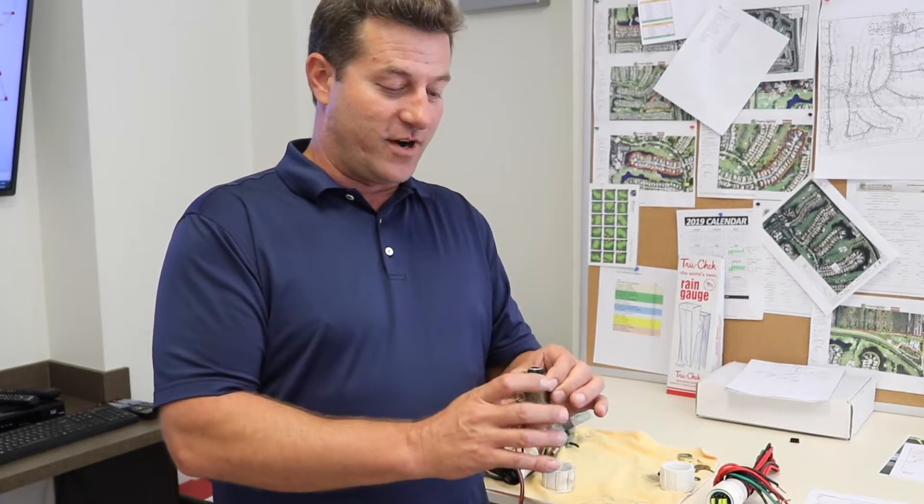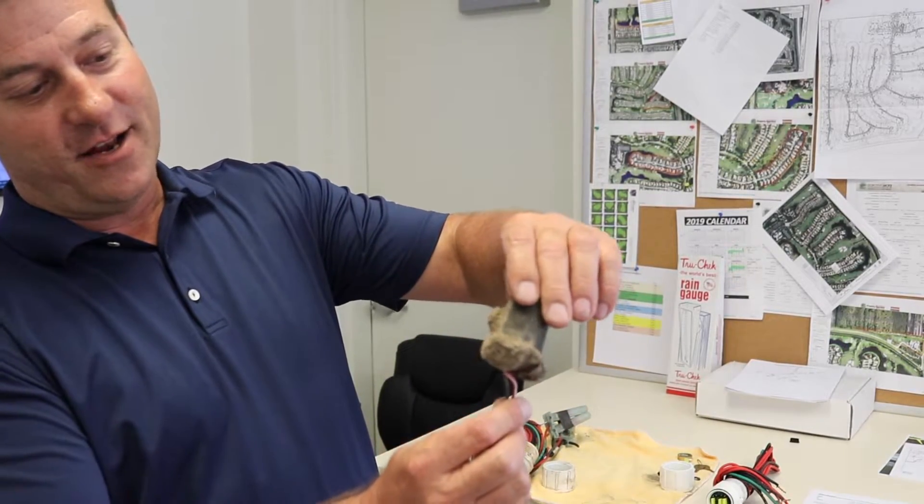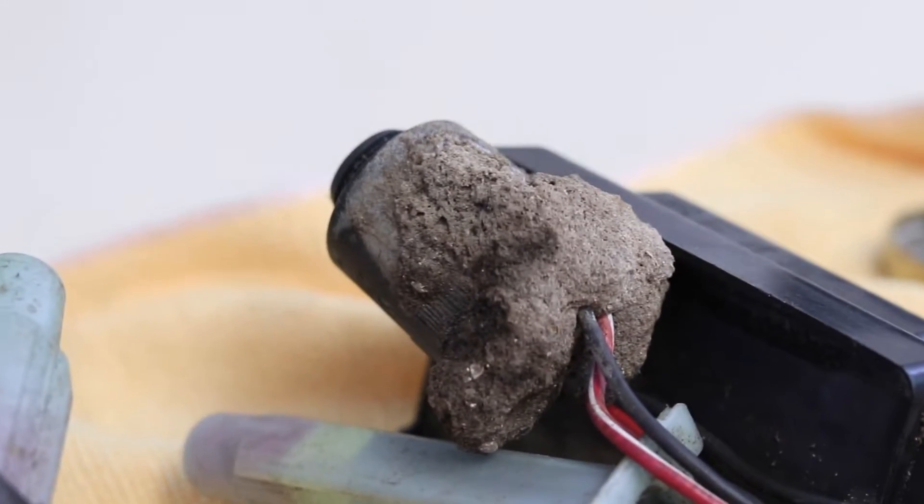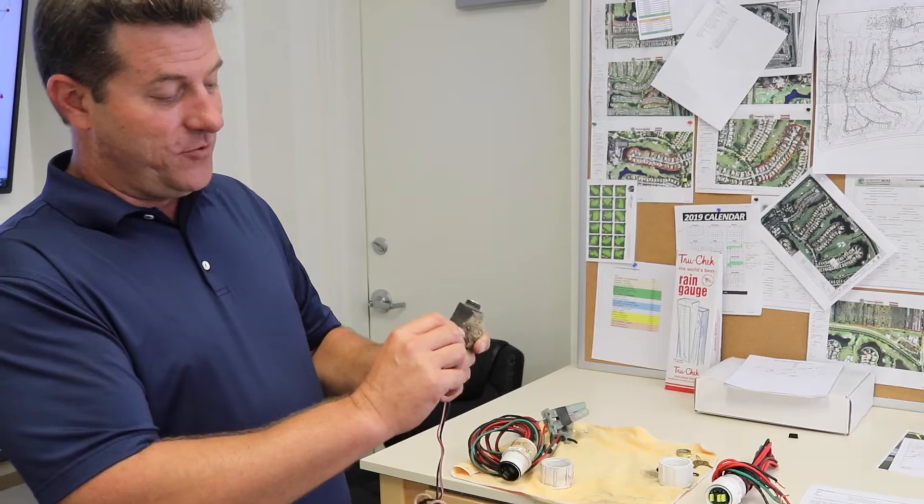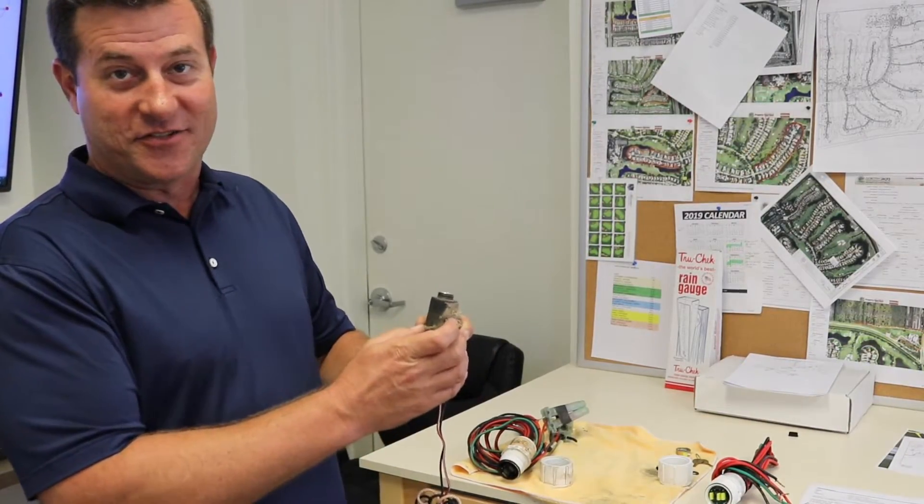One of the interesting things is when the lightning does hit these, if it comes all the way through the system and it's far enough to where it gets to the solenoid, this is what happens to the solenoid. It's just fused with sand all the way around it. This will not come off. Lightning has basically melted that sand to this solenoid.